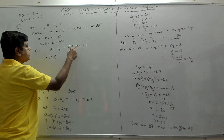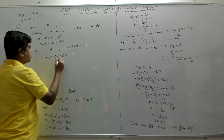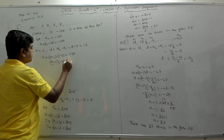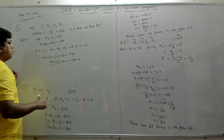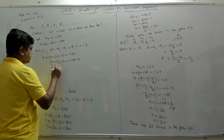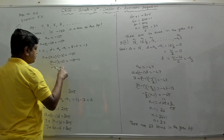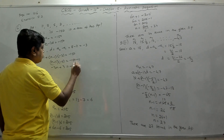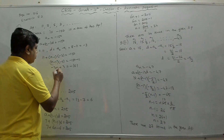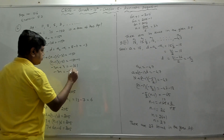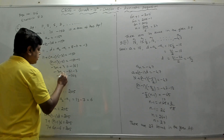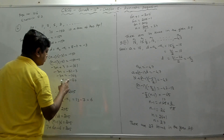Substituting a = 11 and d = −3: 11 + (n−1)(−3) = −150. Moving 11: (n−1)(−3) = −161. Expanding: −3n + 3 = −161, so −3n = −164, giving n = 164/3.